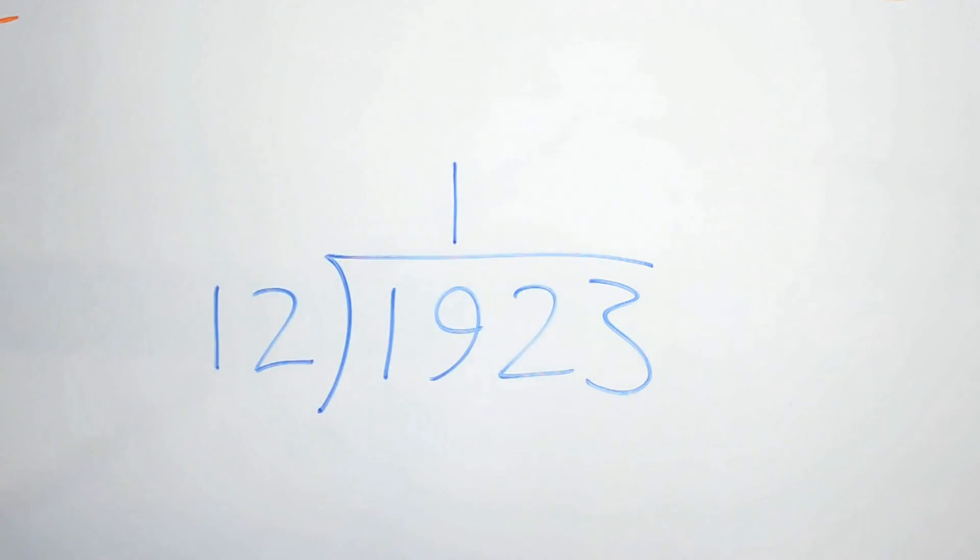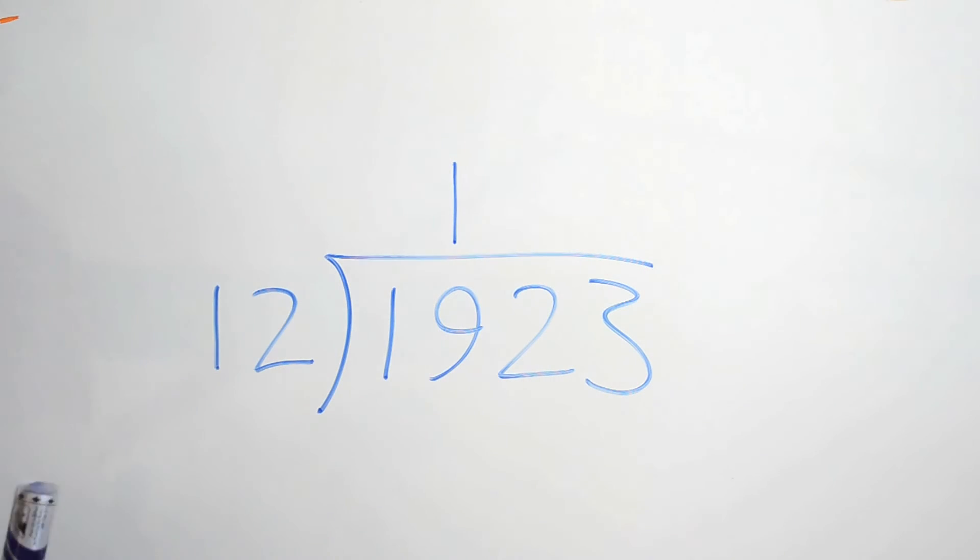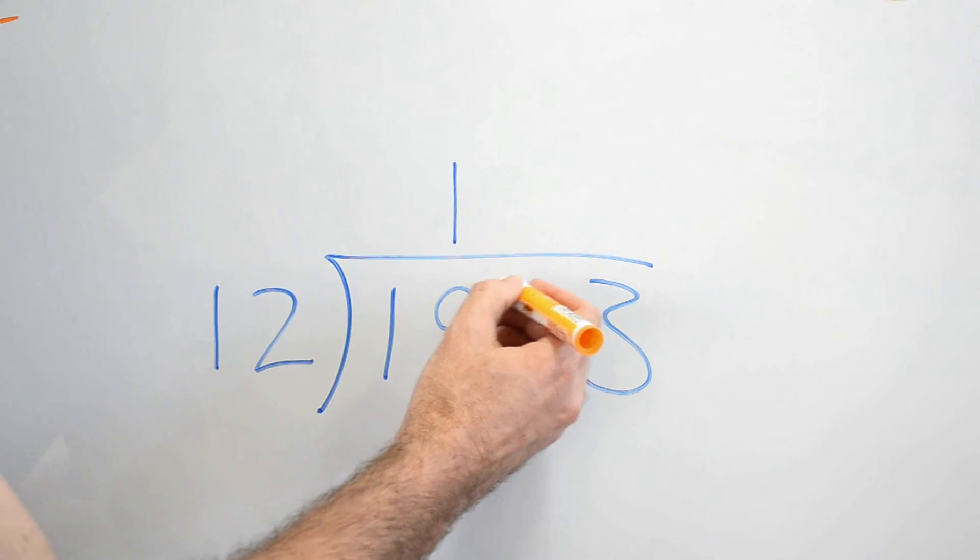Now, you could put a 0 there. We don't really need to. We can remember that there's nothing there. Yep. So, we're going to need a remainder now, aren't we? Because 12 fits into 19, but not neatly. There's a bit left over. How many are left over? Seven. Seven are left over. So I'll put the seven in a different colour there.